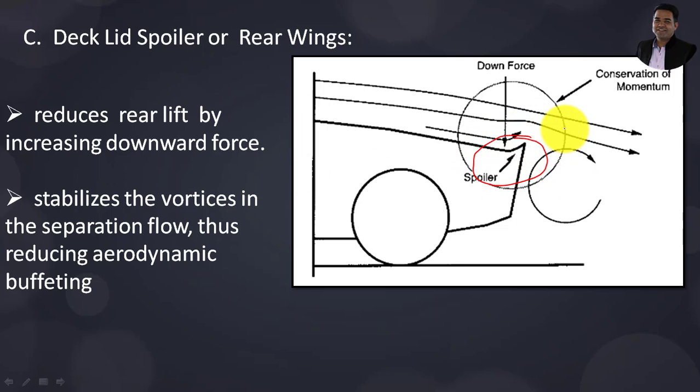Sometimes, in addition to the deck lid spoiler, external wings (also known as spoilers) are fitted at the rear. The shape of this spoiler is designed to reduce rear lift by increasing downward forces.